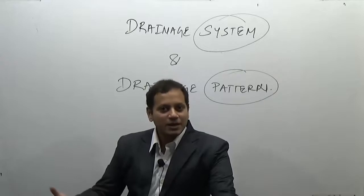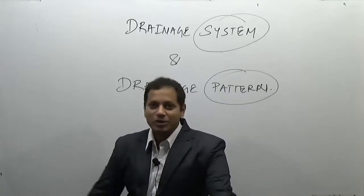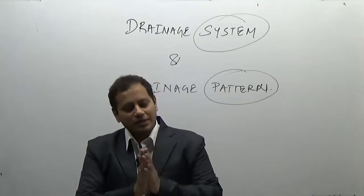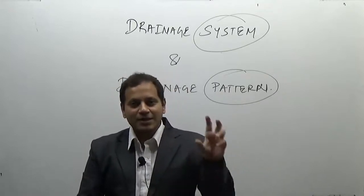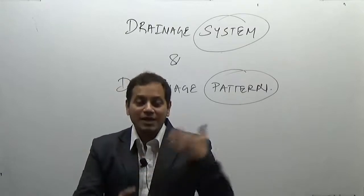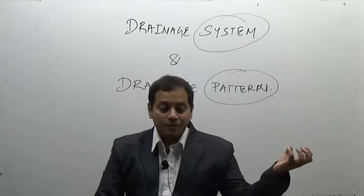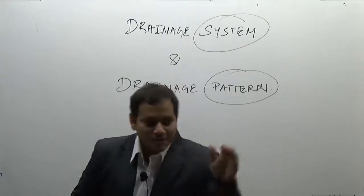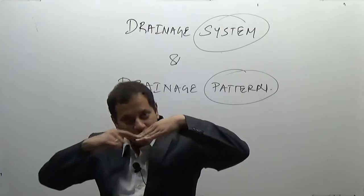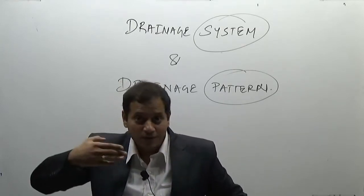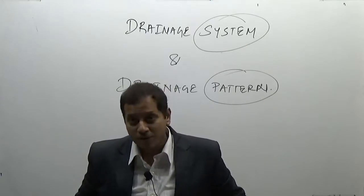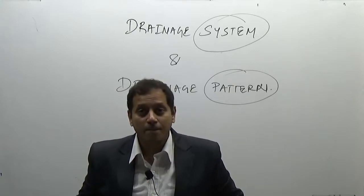The word 'pattern' means a shape or design — in geography it refers to the geographical shape of rivers. 'System' means the entire process of how something evolved and how it works. For example, the Indian political system refers to something which has evolved over a long period of time. Similarly, drainage system means how did the rivers evolve, how did they get their particular flow or direction, and why such a system evolved.